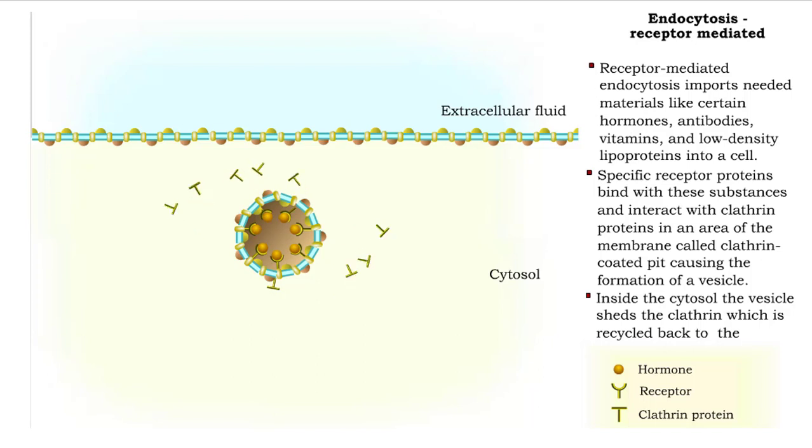Once inside the cytosol, the vesicle loses its clathrin, which is recycled back to the membrane.